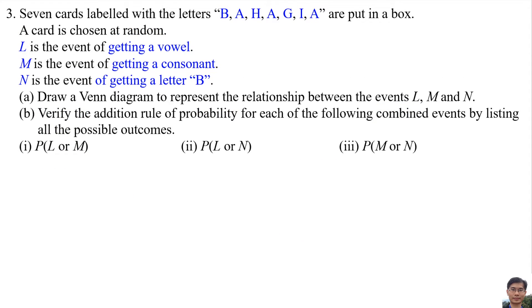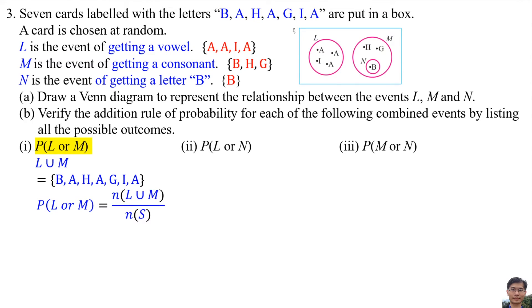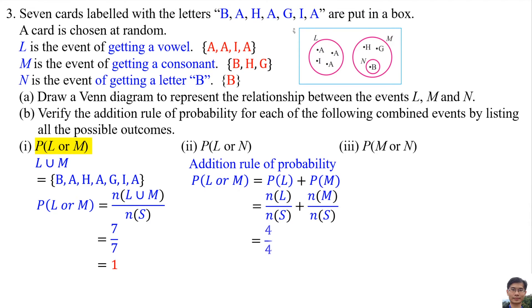Number 3: Seven cards labeled with the letters B-A-H-A-G-I-A are put in a box. A card is drawn at random. L is the event of getting a vowel — the vowels from BAHAGIA are {A, A, I, A}. M is the event of getting a consonant — the elements are {B, H, G}. N is the event of getting the letter B — the element is {B}. Part A: Draw a Venn diagram to represent the relationship between events L, M, and N. For part B, the probability of L or M: L ∪ M has elements {B, A, H, A, G, I, A}, all 7 cards. So P(L or M) = 7/7 = 1. Using the addition rule, the probability is also 1, so the addition rule is verified.